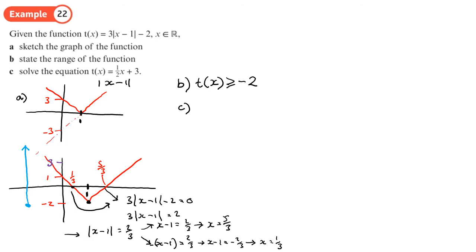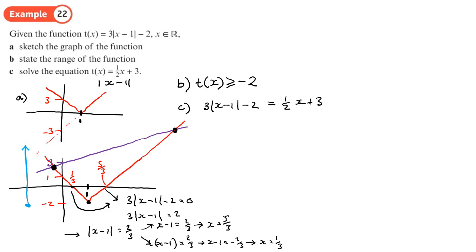It's not to scale, and it's half as steep, so it looks something like this. We need to extend the line because there's a crossing point here and a crossing point here. For the crossing point on the right-hand side, we solve 3(x - 1) - 2 = ½x + 3, since this point is on the original (unreflected) part.